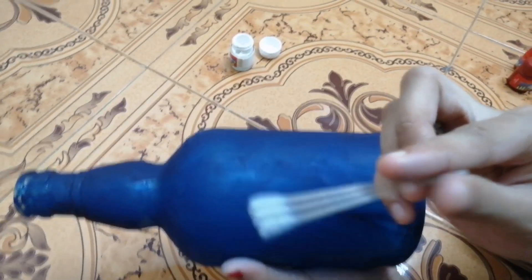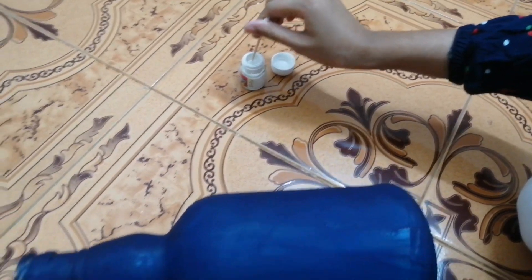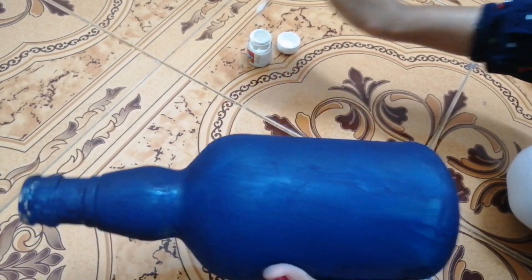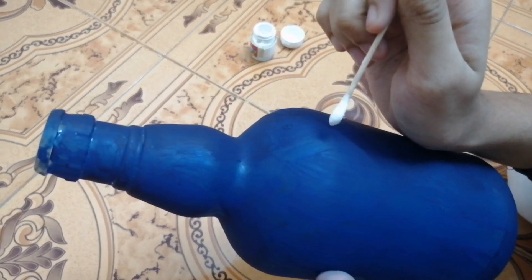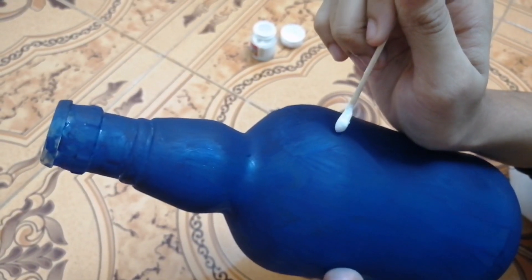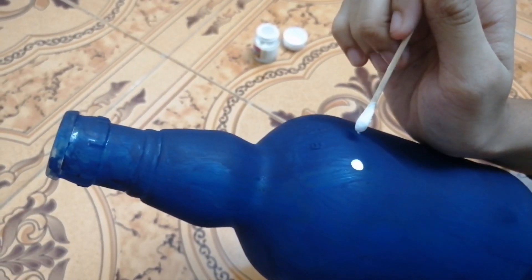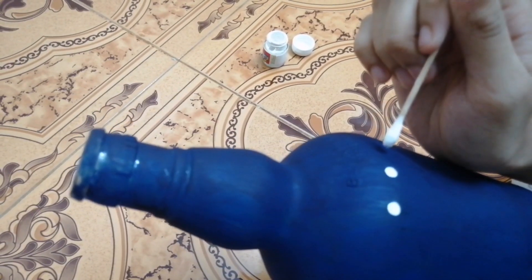Next step is to take an ear bud and dip it in white paint, and we have to put dots like this. We have to leave a little space.